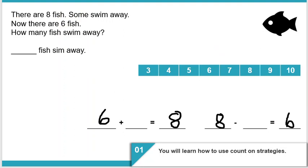Now we're going to apply the number line to solve these word problems, as we talked about in other videos. There are eight fish, and some swim away — so we know we're dealing with a subtraction problem. Now there are six total fish. We had eight fish, some swam away, and now we're left with six.